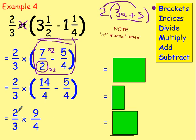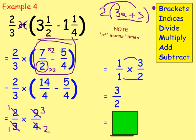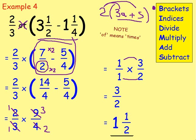To multiply fractions, simplify first. Two and four: divide both by two — giving one and two. Nine and three: divide both by three — giving three and one. Rewriting: one over one times three over two. One times three is three, one times two is two — giving three over two. That's an improper fraction, so rewrite as a mixed number: three divided by two is one remainder one. Because we're working with halves, our final answer is one and a half.